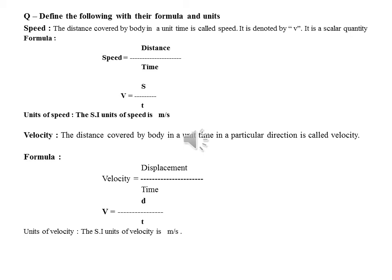The second definition is velocity. The distance covered by a body in a unit time in a particular direction is called velocity. In the previous lesson, we learned about displacement — the distance in a particular direction — which is used to define velocity.